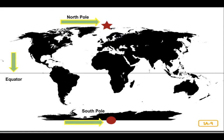The map also shows the equator — an imaginary line around the middle of the earth. The equator divides the earth into two equal halves. The area along the equator receives the most direct sunlight and is therefore generally the warmest area on the surface of the earth.